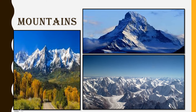A mountain is any natural elevation of the Earth's surface. The mountains may have a small summit and a broad base. It is higher than the surrounding area. Some mountains are even higher than the clouds. In some mountains, there are permanently frozen rivers of ice. They are called glaciers. There are some mountains you cannot see as they are under the sea.